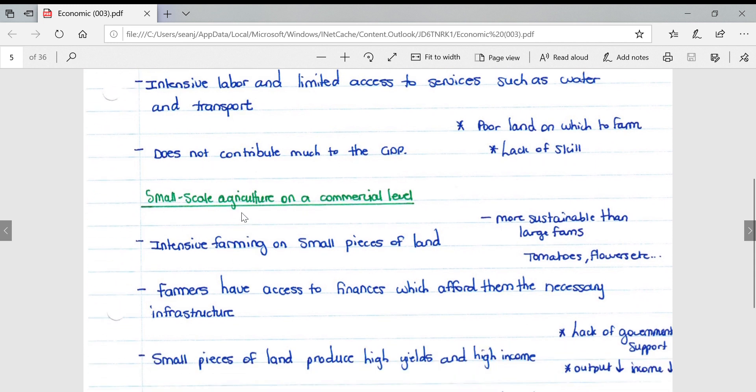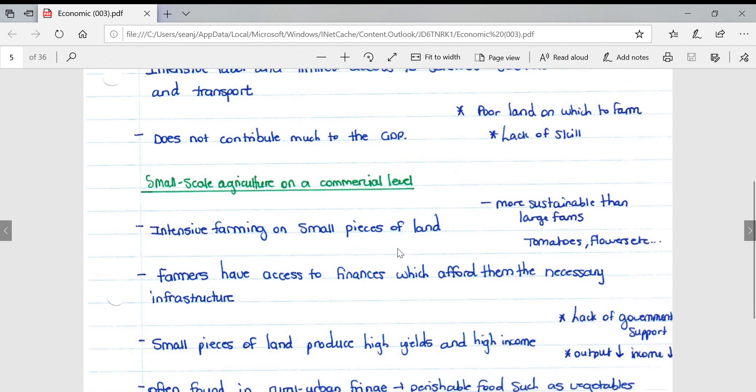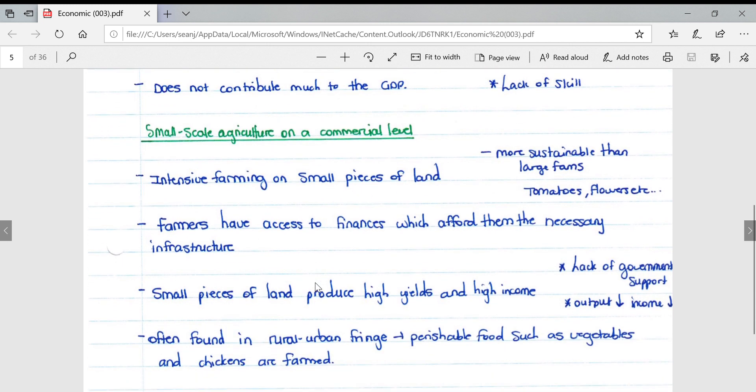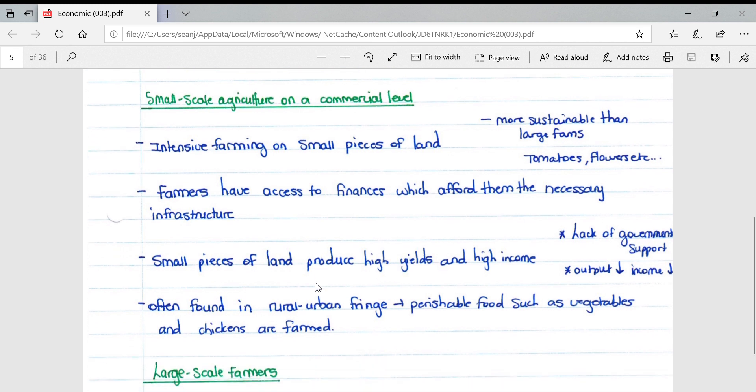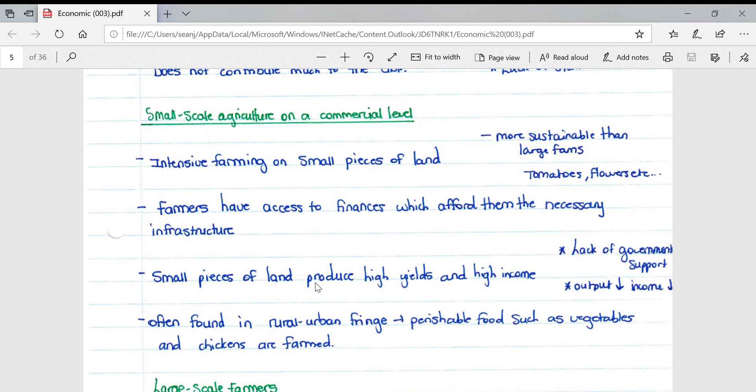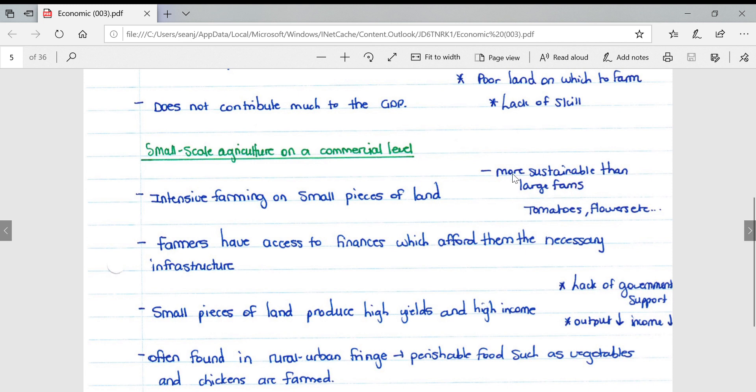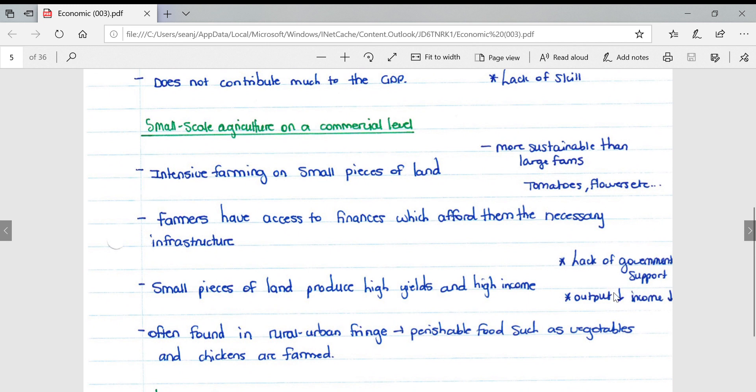Small-scale agriculture on a commercial level involves intensive farming on small pieces of land. Farmers have access to finances which afford them the necessary infrastructure. Small pieces of land produce high yields and high income levels, often found in rural-urban fringes. Perishable foods such as vegetables and chickens are farmed in these areas. They're more sustainable than large farms, however they face challenges like lack of government support.